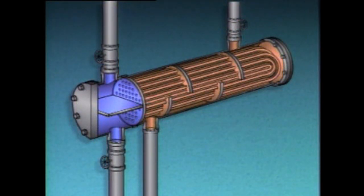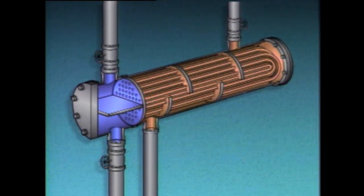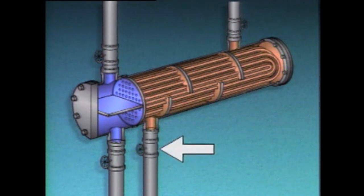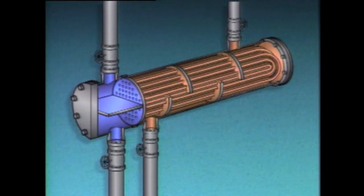On the heat exchanger shown in this example, there is no isolation valve on the outlet of the shell side. Some shell and tube heat exchangers have an isolation valve on this outlet. With those heat exchangers, the isolation valve must be opened to complete the flow path through the unit.